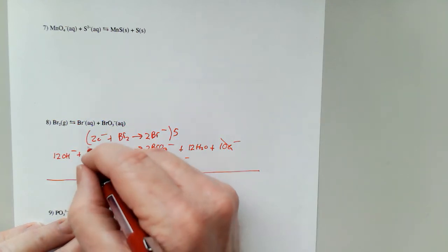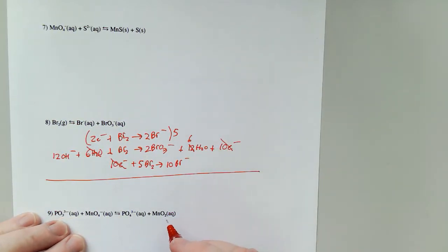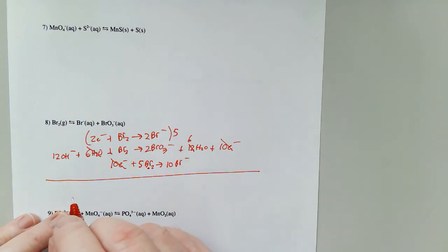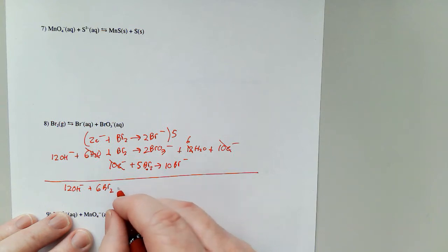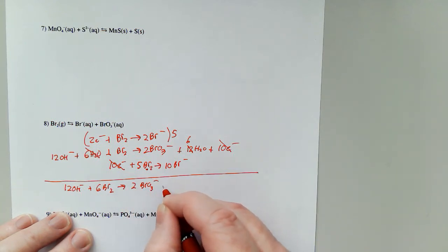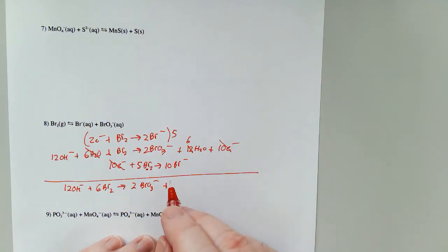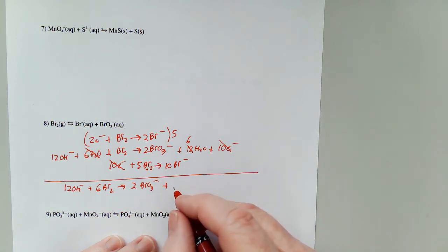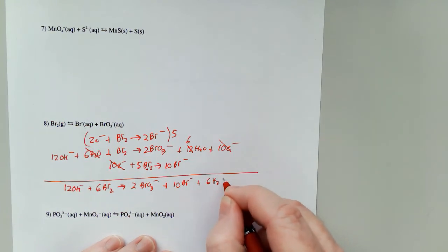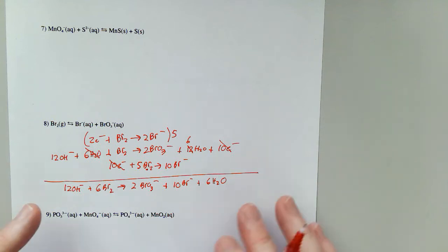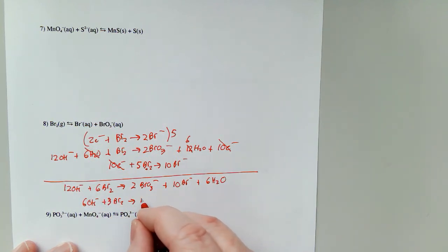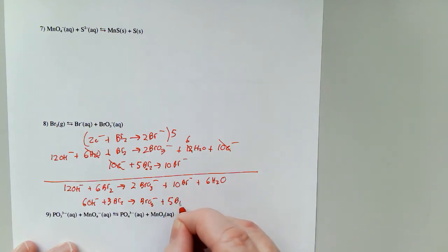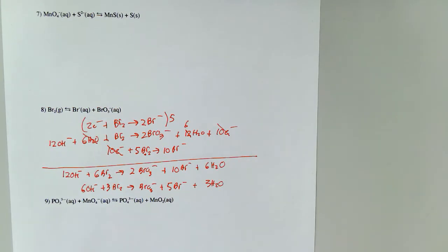Ten electrons cancels. Six waters turns twelve into six. So now five Br₂s and one Br₂ ends up giving me six Br₂s. So I have twelve OH⁻ plus six Br₂ to give me two BrO₃⁻ plus ten Br⁻ and six H₂O. Seeing everything can be divisible by two: six OH⁻ plus three Br₂ gives me BrO₃⁻ plus five Br⁻ and three H₂O. There we go, number eight.